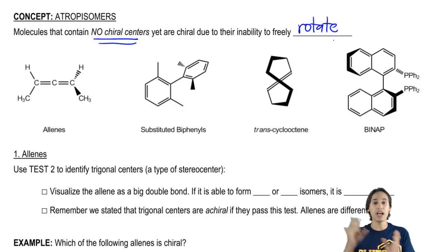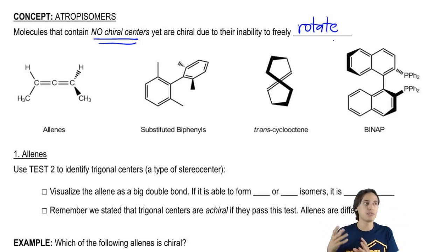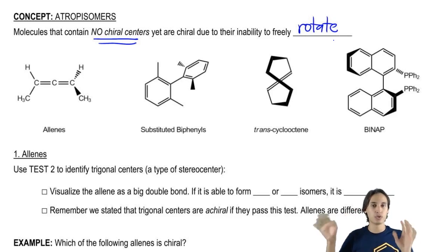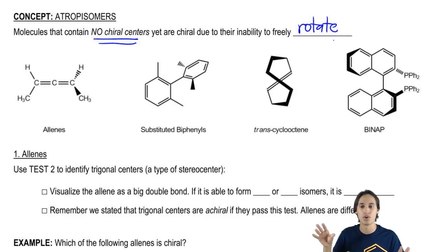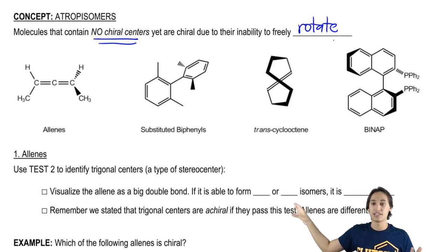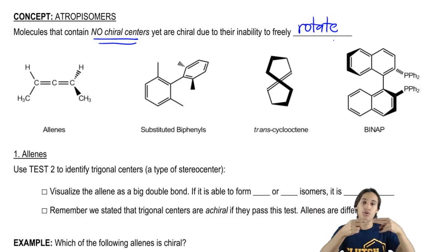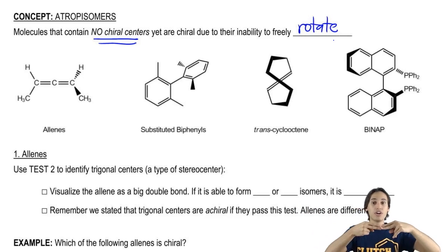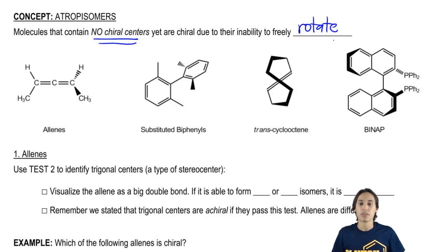So here I have just a few — in fact there are a few more, but these are the really common ones. Allenes, as you can see, are two double bonds together. They can't rotate because double bonds can't rotate.